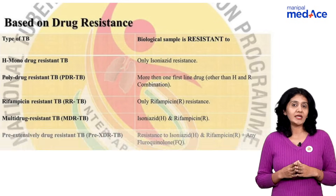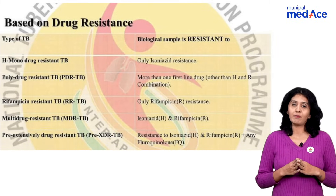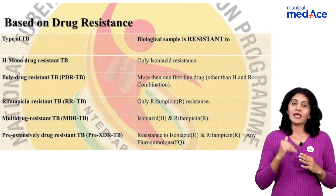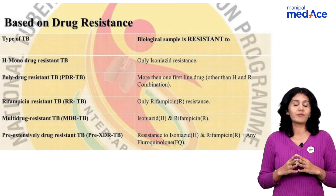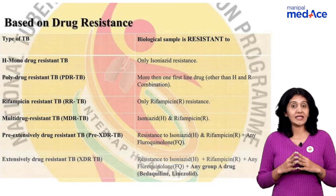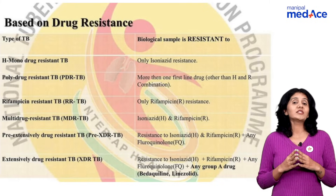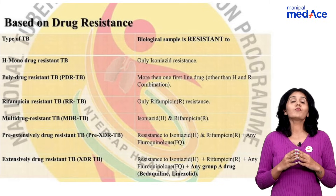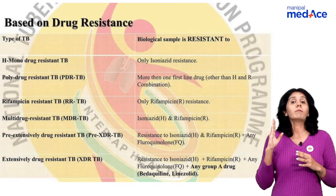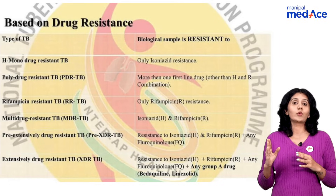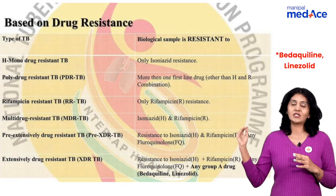What is pre-XDR? There is resistance to isoniazid plus rifampicin — that is MDR — plus one of the fluoroquinolones plus bedaquiline and delamanid, which are under second line anti-tubercular drugs.